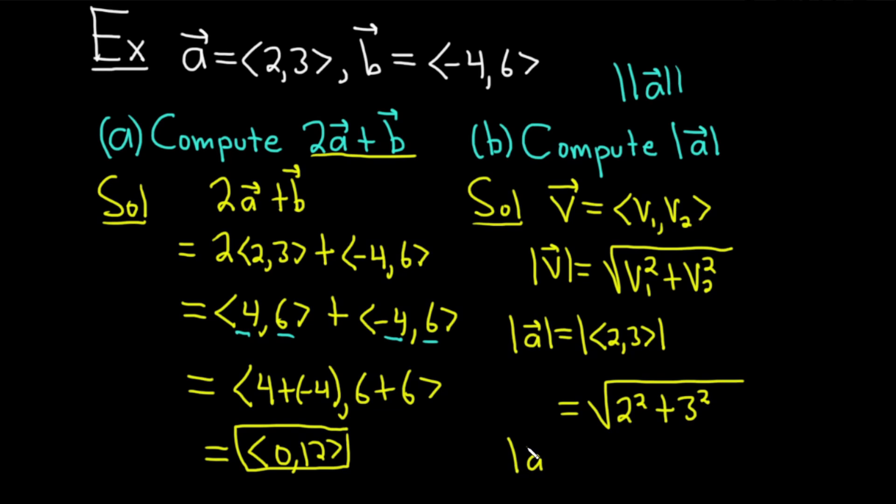So we have that the magnitude of a is equal to, well, 2 squared is 4, 3 squared is 9, 4 plus 9 is 13. So it's equal to the square root of 13. The magnitude of the vector is also called the norm, and it's also called the length. So multiple names for the same thing.